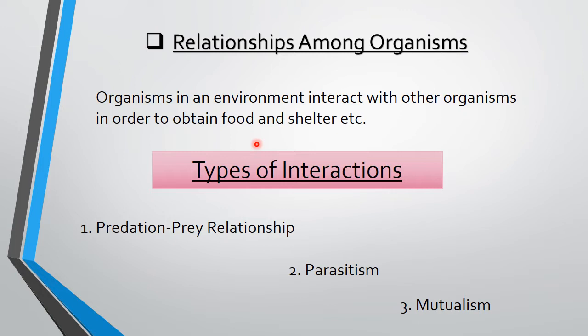Interactions can be different. Now we will see it in detail. If we talk about types, we will talk about the main types of interactions. Number 1 is Predator-Prey Relationship. Number 2 is Parasitism. Number 3 is Mutualism. Now let's discuss all these 3 interactions in detail.